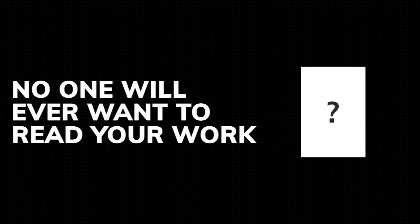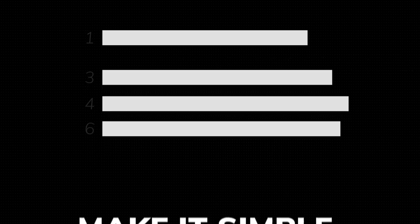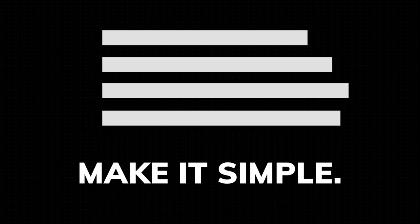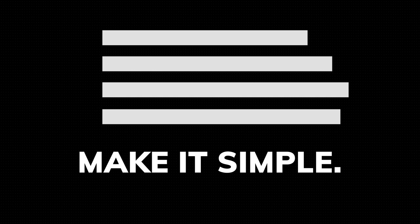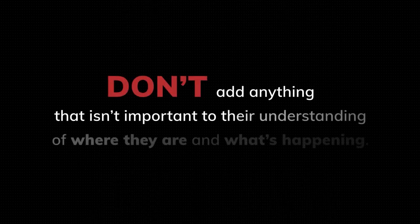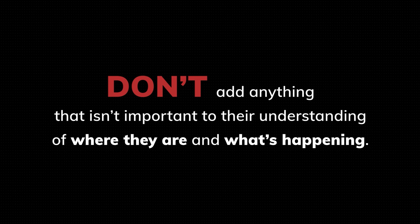Instead, be extremely intentional with your scene descriptions. If you have a section that's six or seven lines long, find out where the fluff is in your sentences and reduce them down. Make it simple and clear. What are the most important scene elements you need to tell the reader? Don't add anything that isn't important to their understanding of where they are and what's happening on the page.